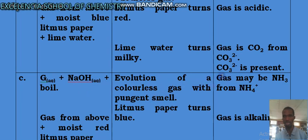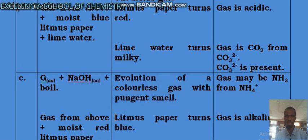You suspect gas may be NH₃ from NH₄⁺. Gas from above plus moist red litmus paper. Litmus paper turns blue, showing that the gas is alkaline.